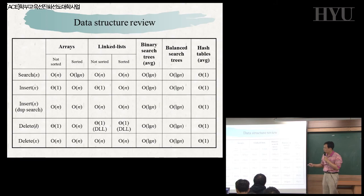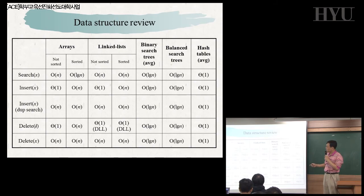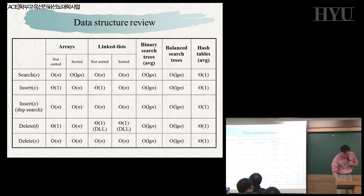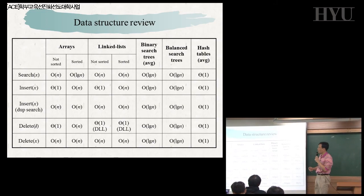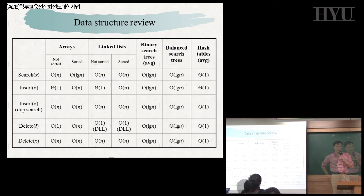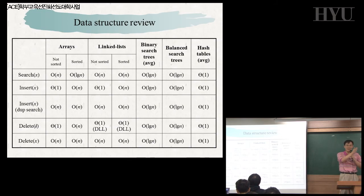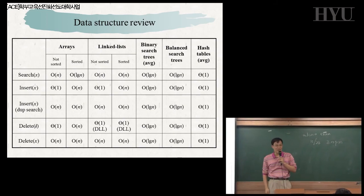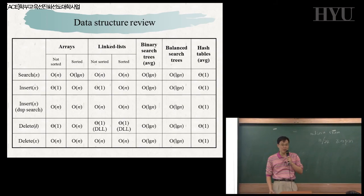Now let's compare the running times of these operations. First, compare the running times of search on an unsorted array and a sorted array. Can you explain why the running time of searching an element x takes O(n) time? Because it is unsorted, in the worst case we have to check every element in the array. So that's why its running time is O(n).